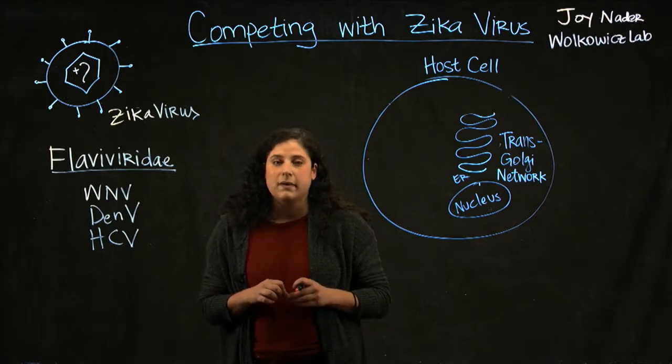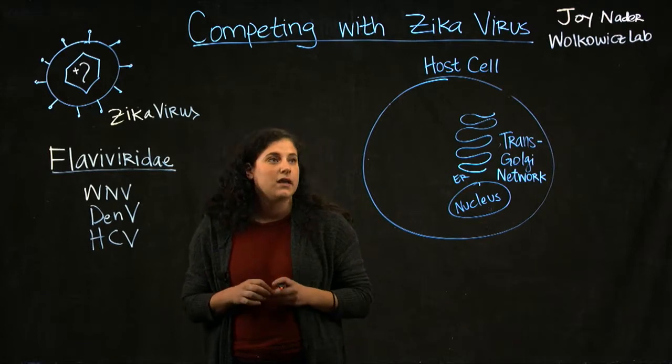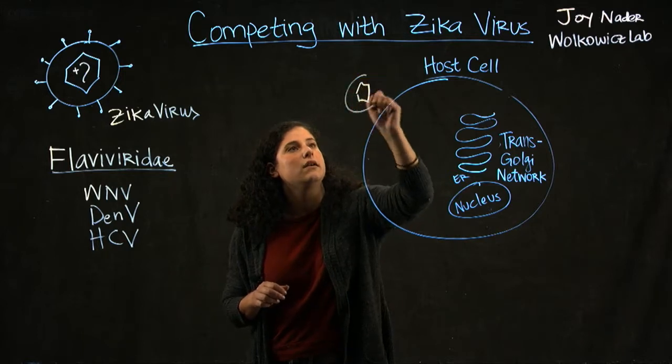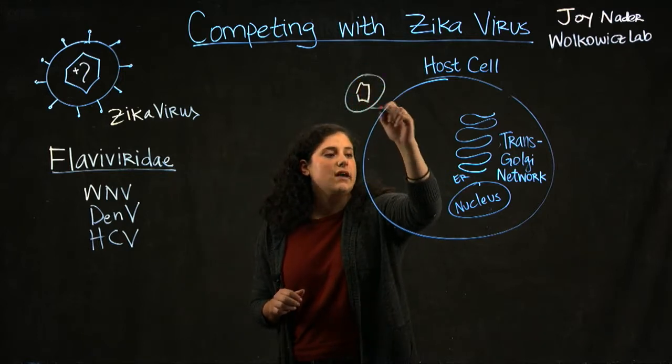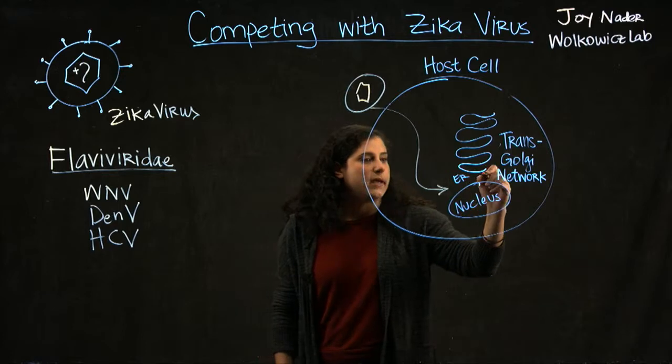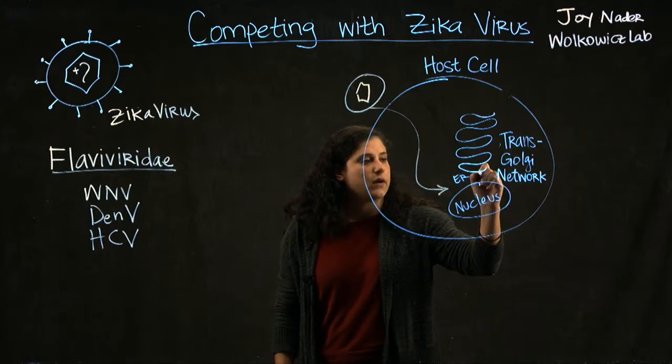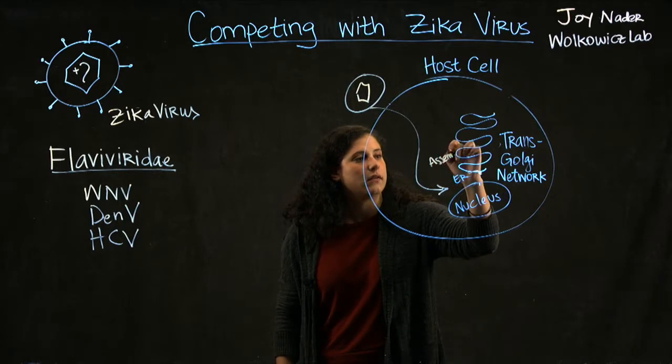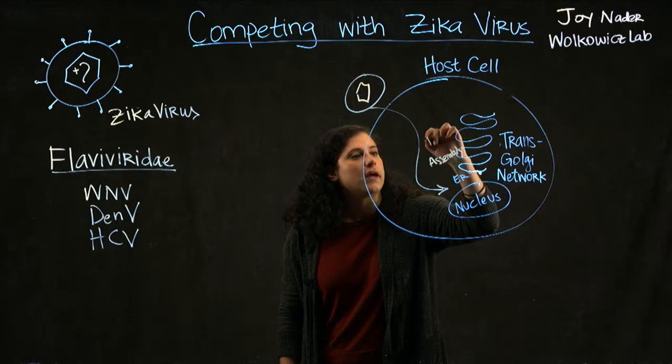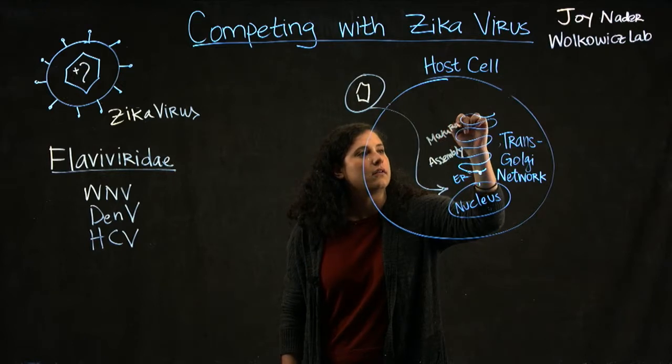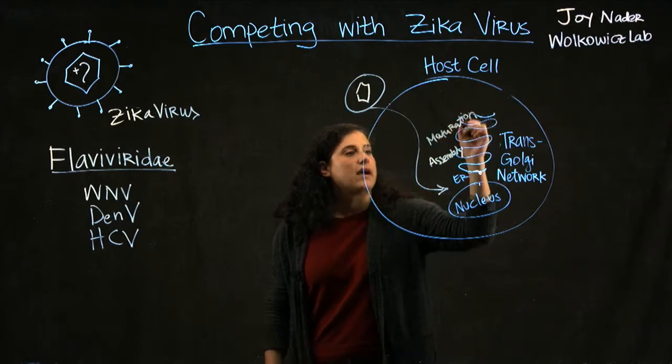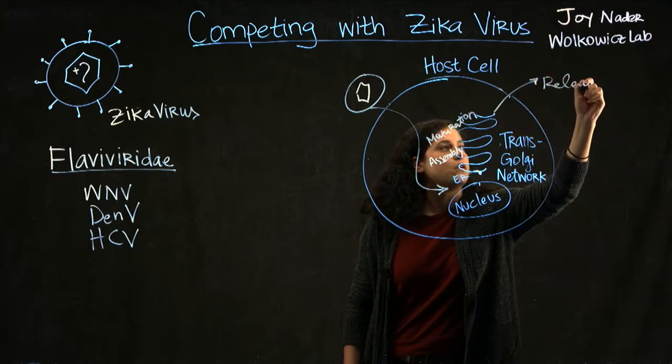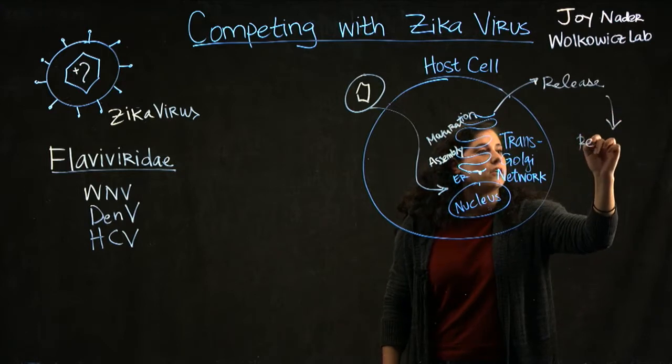We do this by looking at the viral life cycle. When Zika virus enters the host cell, it embeds its genome in the ER where it replicates and translates, then undergoes assembly and maturation. The viral particles are then released where they can reinfect a new host.